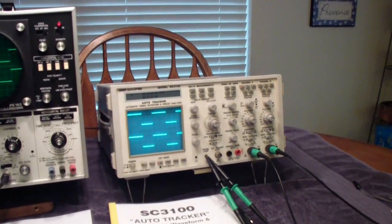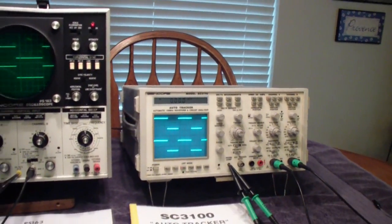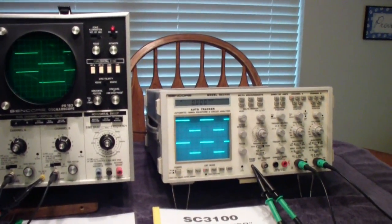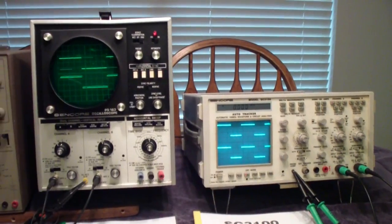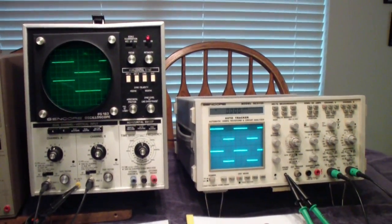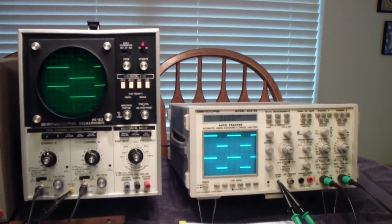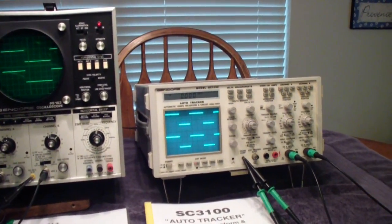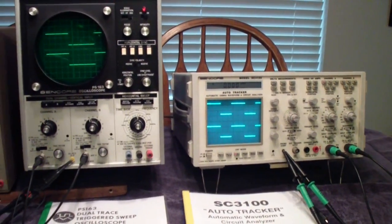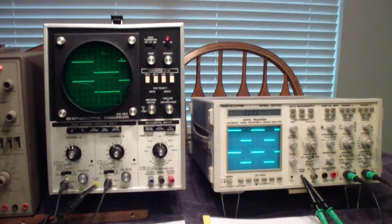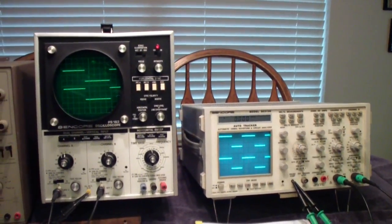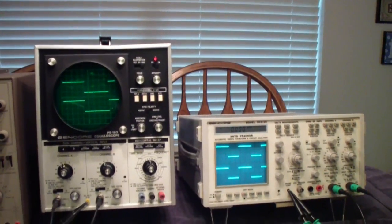The 3100 was a 100 megahertz scope with all kinds of automated measurement features. By the 90s, the big problem that service centers had was getting trained technicians. So they wanted to be able to train somebody up pretty quickly. The more automation you could have in a piece of test equipment, the better things were. Most of this is just war stories I've heard from people who ran service departments and service centers.